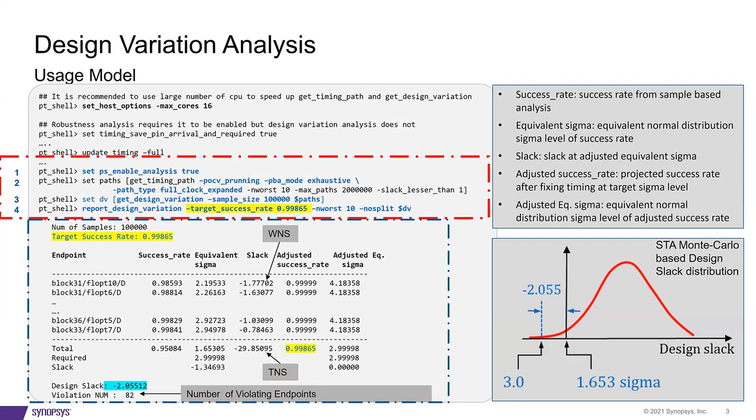The fifth column is the adjusted success rate, which is the endpoint success rate after the timing is fixed at that endpoint. Finally, the adjusted equivalent sigma, which is the equivalent sigma level corresponding to the adjusted success rate. From the final design slack distribution, we can then determine the design slack shown at the bottom in blue. Design slack simply means by how much we need to push the timing to get to the three sigma success rate. That is pushing the entire design slack distribution by a certain value to meet the three sigma success rate. Finally, notice the violation number at the bottom of the DVA report. It simply indicates the number of endpoints which have negative slack.